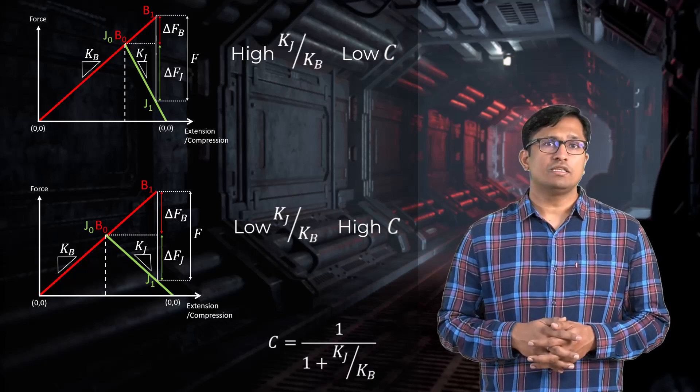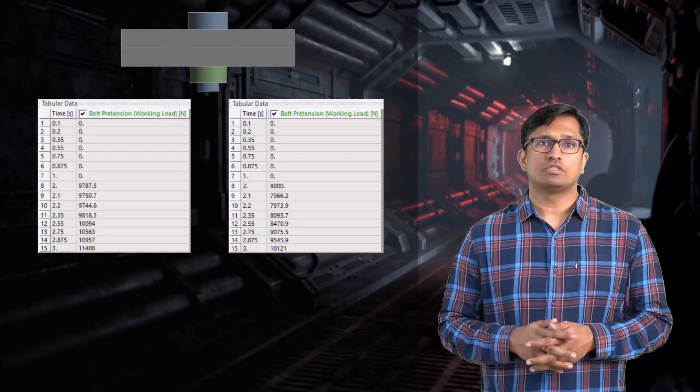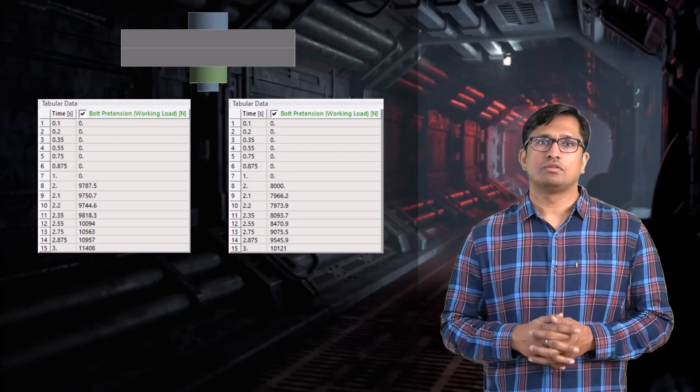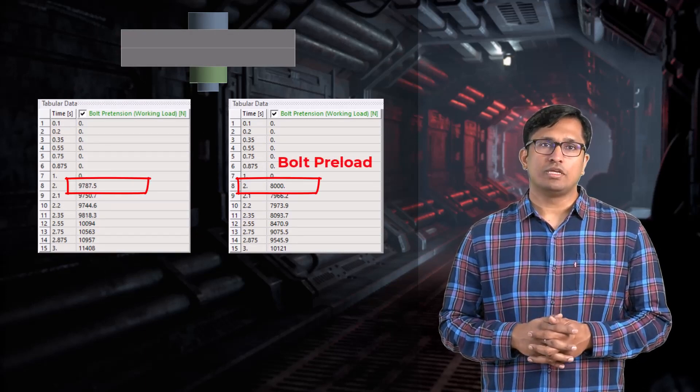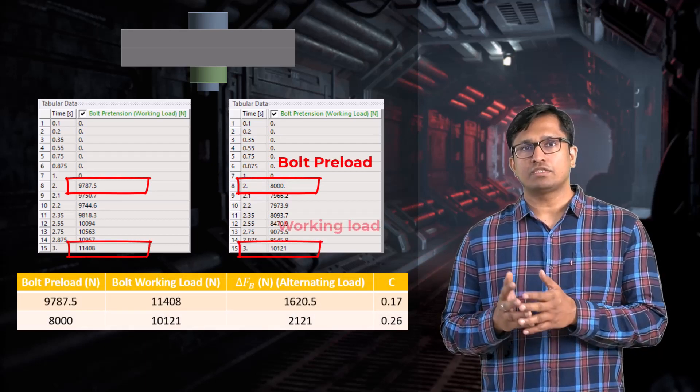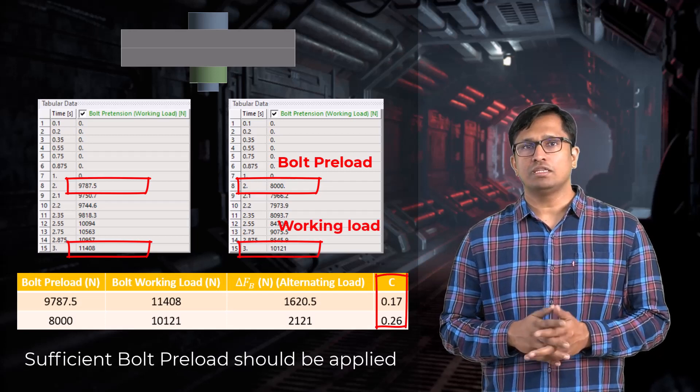In the next case, we see the importance of tightening the bolts sufficiently, i.e. applying a sufficient bolt preload. If we reduce the applied bolt preload and subject the joint to the same amount of external force, the fraction of external load carried by the bolt increases.